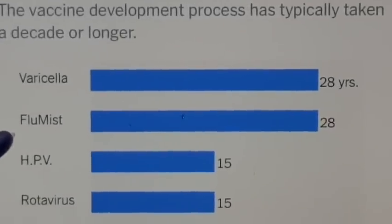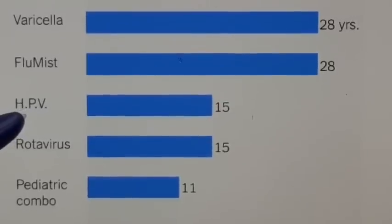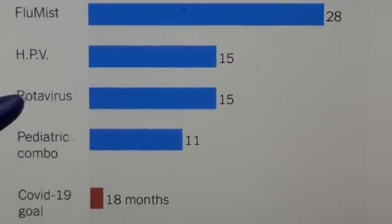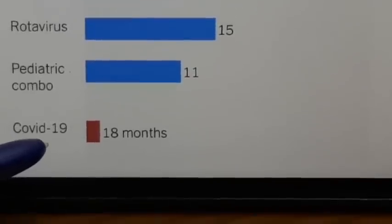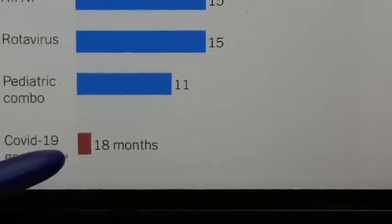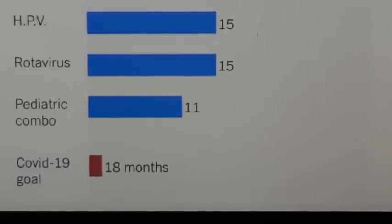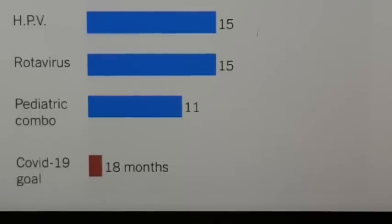We got the vaccine for the Papilloma Virus — the HPV vaccine — where females were at risk for cancer. It is 15 years now, and the same for rotavirus. But now, when COVID-19 is such a great challenge, we try to set the goal in 18 months. This is our chart from the World Health Organization — it is the most important thing to consider.